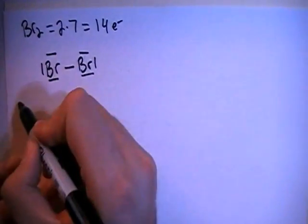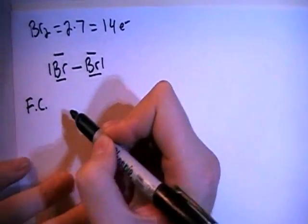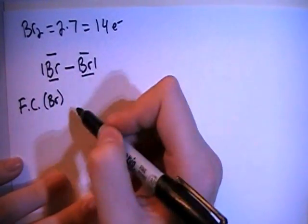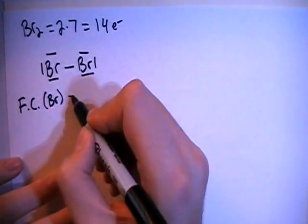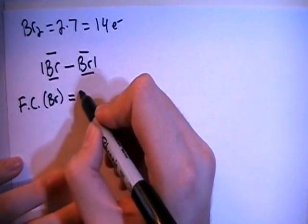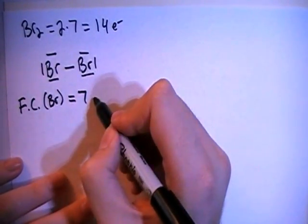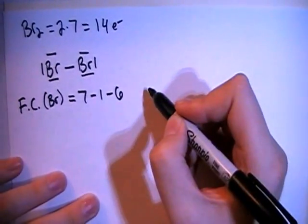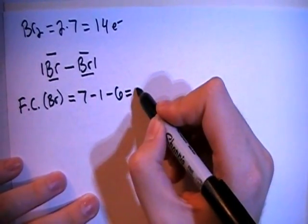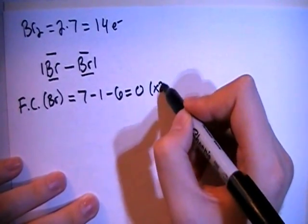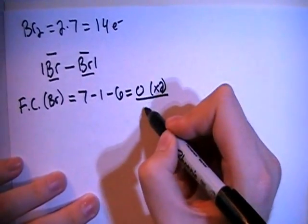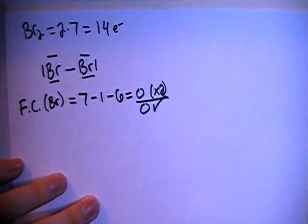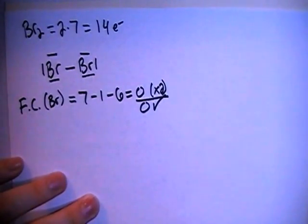Let's go ahead and verify that just by calculating the formal charge. So, on each of the bromines, they both have one single bond and six non-bonding electrons, so their formal charges will be equal. The formal charge is going to be the seven valence for bromine, minus the one single bond, minus the six non-bonding electrons for a formal charge of zero. Multiply that times two, because there's two of them, and that still results in an overall formal charge of zero, which is what we want, because this is not a charged particle or compound.